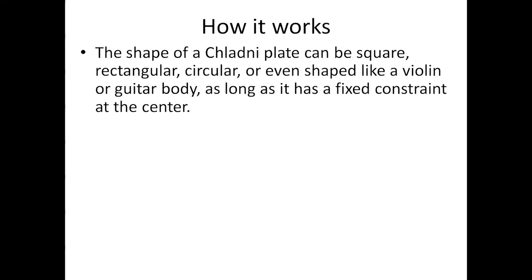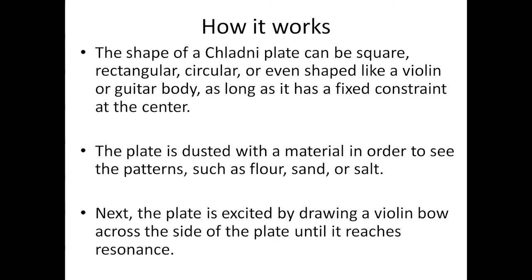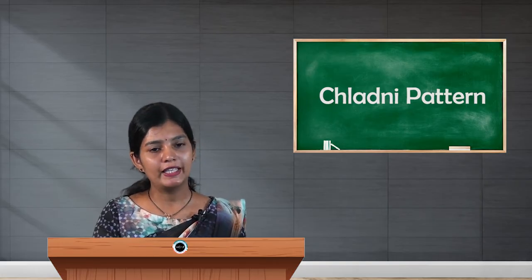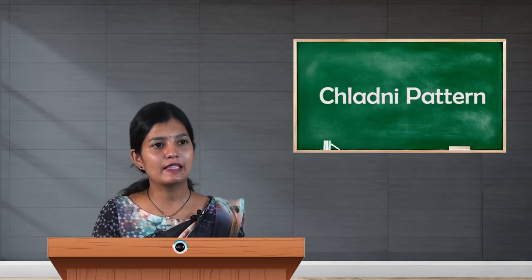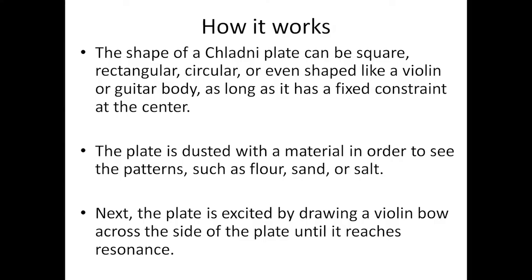The shape of a Chladni plate can be square, rectangular, circular, or even shaped like a violin or guitar body, as long as it has a fixed constraint at the center. The plate is dusted with a material such as sand, flour, or salt in order to see the patterns formed when the plate vibrates.